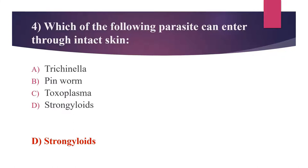For Option A, Trichinella: the disease is acquired by eating raw or undercooked meat. Pinworm, that is Enterobius vermicularis, is transmitted via the fecal-oral route. Toxoplasma infection can be transmitted to humans by three principal routes: ingestion of raw or inadequately cooked meat; exposure to infected cat feces; and blood transfusion, organ transplantation, or mother-to-child transmission during pregnancy.